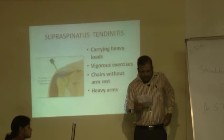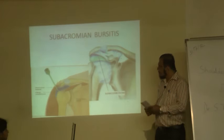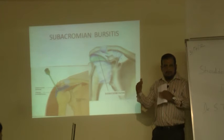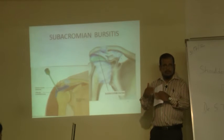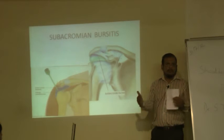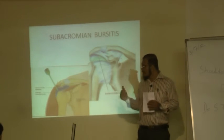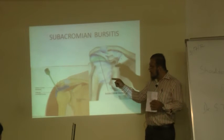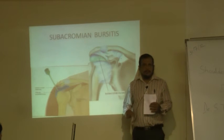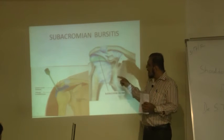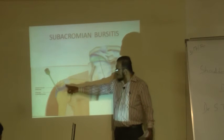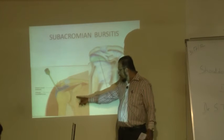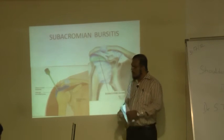The third thing is subacromial bursitis. A bursa is a bag of oil which is placed between tendons, muscles, and bones to lubricate the movements of all these musculoskeletal tissues so that we don't get unnecessary friction and pain. But what if that same bursa itself becomes painful and inflamed? This is one such bursa — the subacromial bursa, below the acromion process of the shoulder blade.